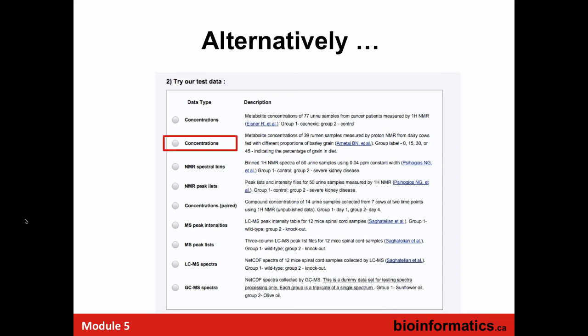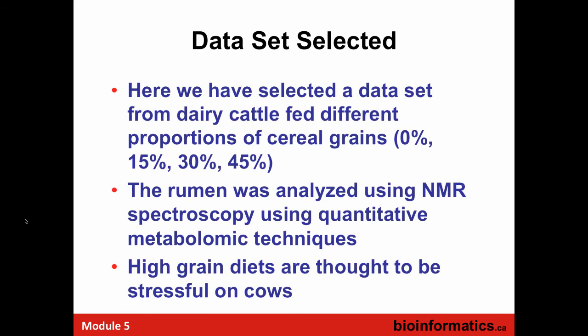There'll be NMR data sets, mass spec data sets, peak picked ones, concentration tables — all of them. So you can see what they look like, just to make sure the format is right. In this case, we're clicking on one particular data set which is from cows. We're looking at dairy cattle. In North America, we tend to feed dairy cattle lots of grain, whereas in Australia, New Zealand, and England, they feed them lots of grass.